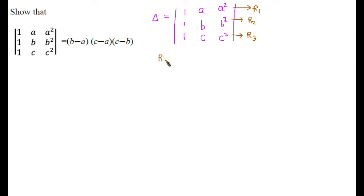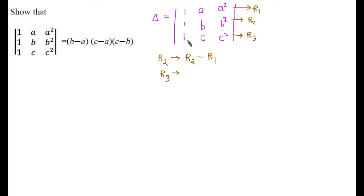Now, what we are going to do: with row R2, I am going to do R2 minus R1. So that we will get b minus a. And with row R3, I am going to do R3 minus R2, so we can find c minus b.